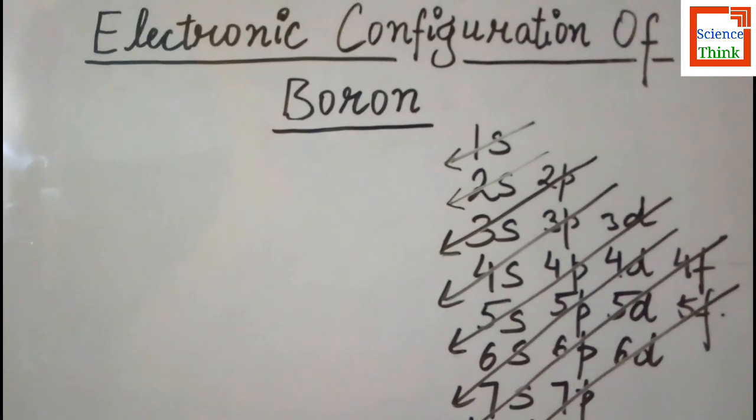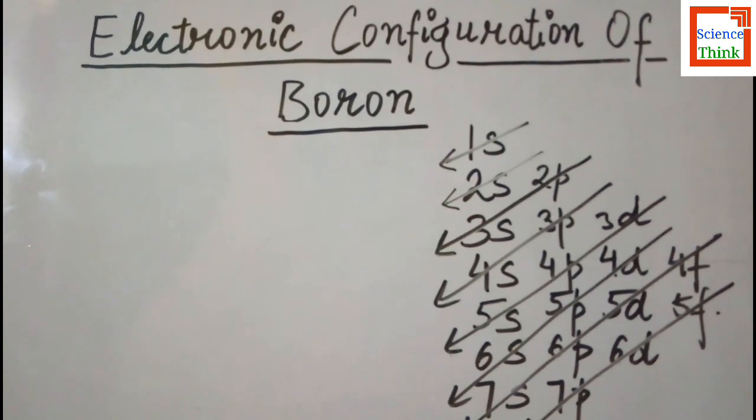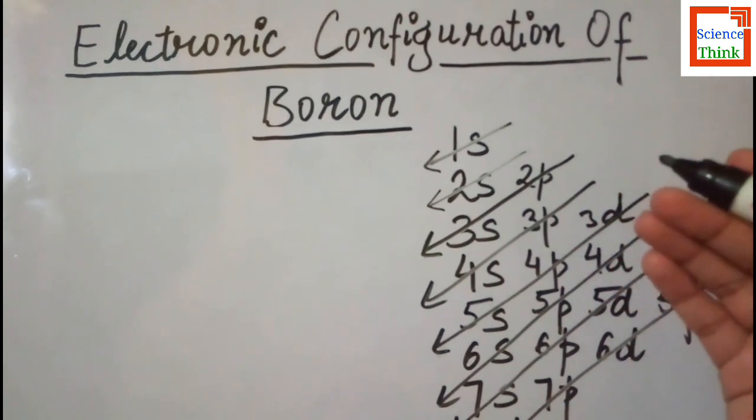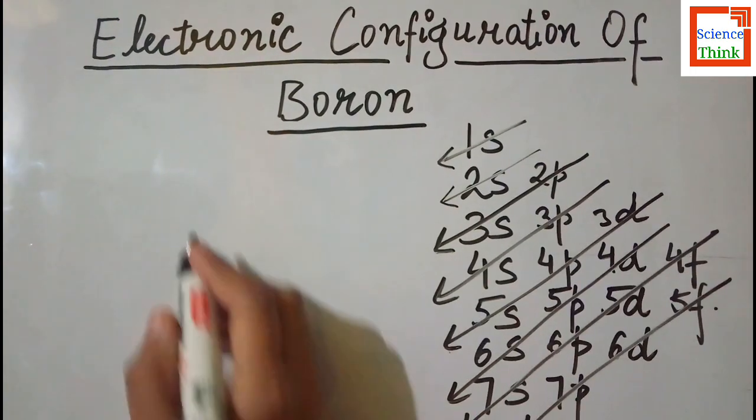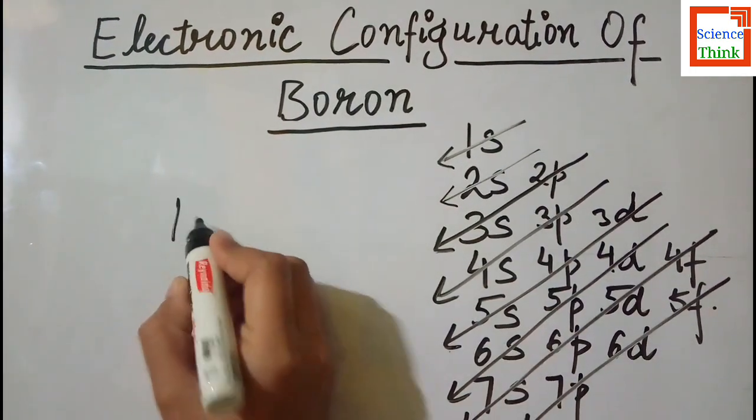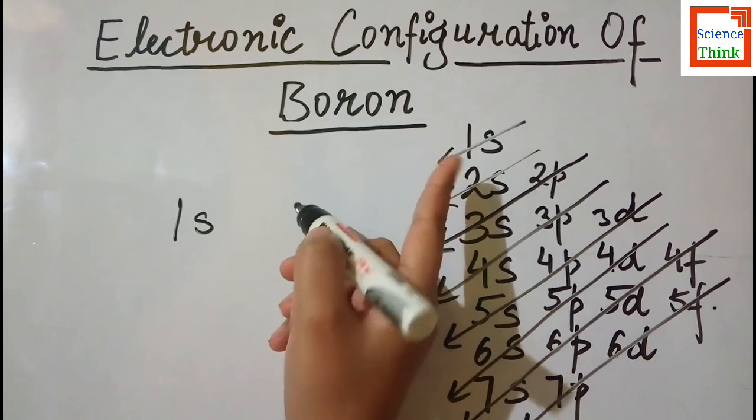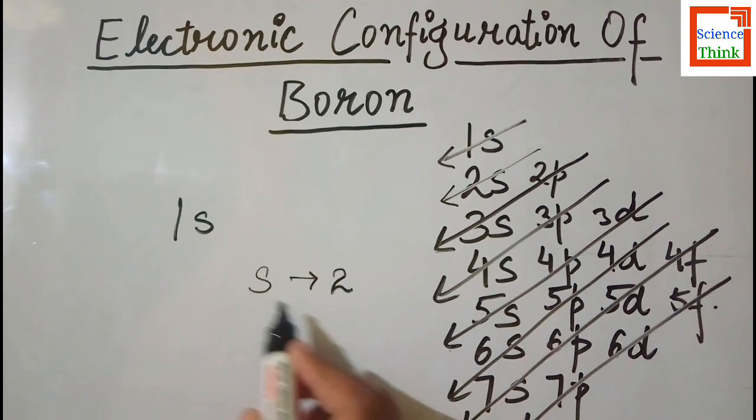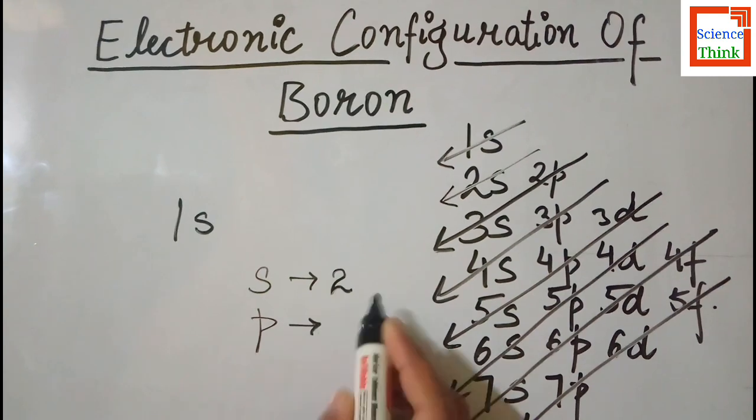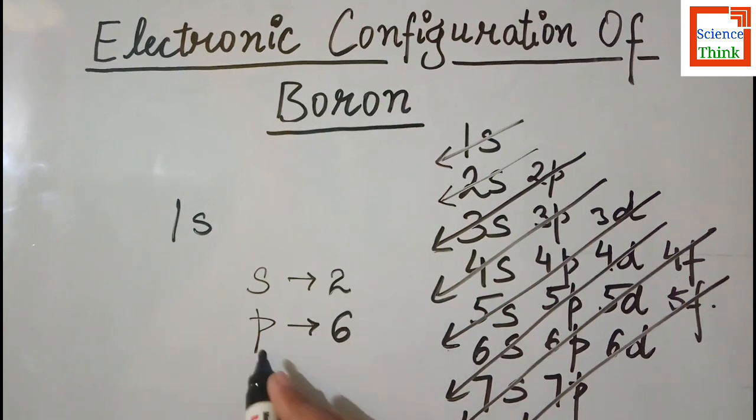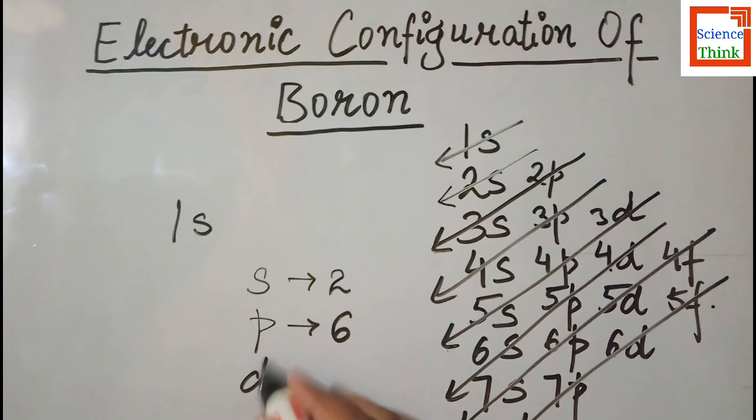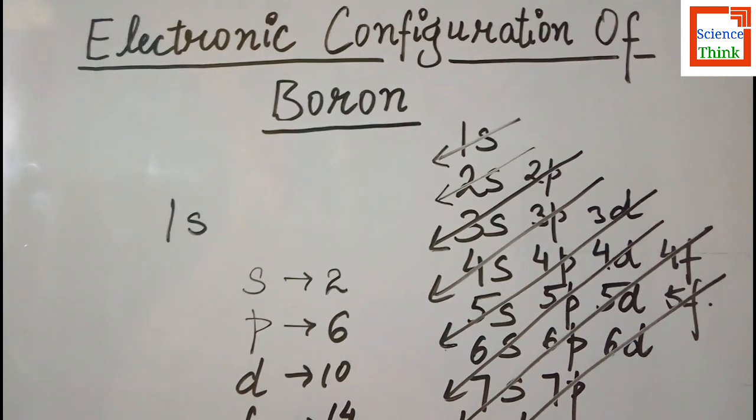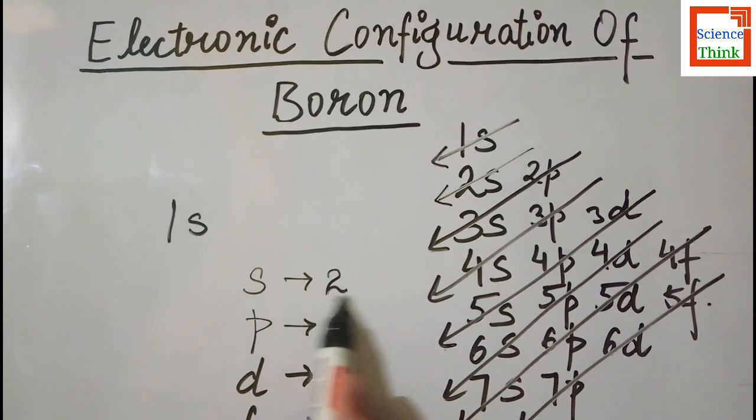The filling of electrons we know is based on the Pauli exclusion principle and Aufbau principle, which is further based on Hund's rule of maximum multiplicity. From here we know firstly we will fill the 1s orbital, and we also know s orbitals can only contain 2 electrons. P orbitals cannot accommodate more than 6 electrons, d orbitals 10 electrons, and f orbitals 14 electrons.